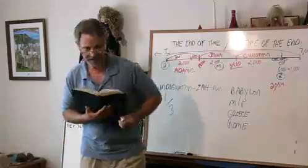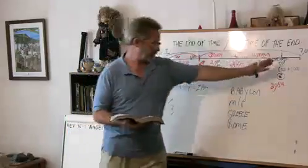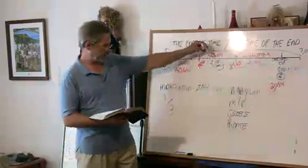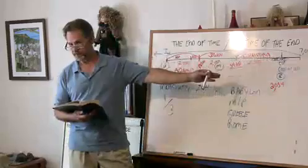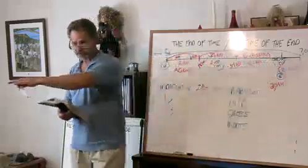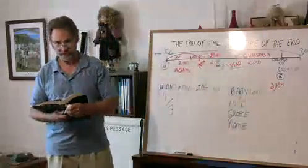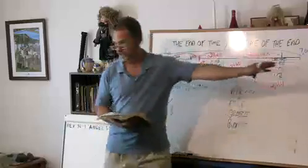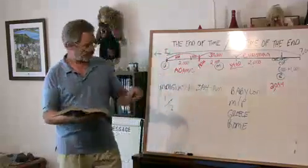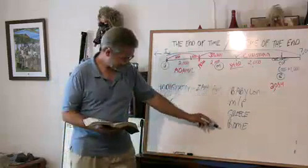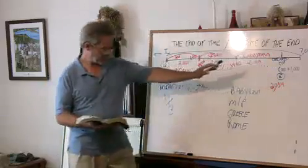By the time we get to chapters 7 and 8, where he outlines these world empires, we're following history from about 605 BC all the way forward. As we follow history, we realize it takes us to Rome divided — then the Lord comes. Babylon is no longer, Media-Persia is no longer, Greece is no longer, because Rome comes. The only thing left is when Rome is divided into the ten toes. There's nothing left after that.